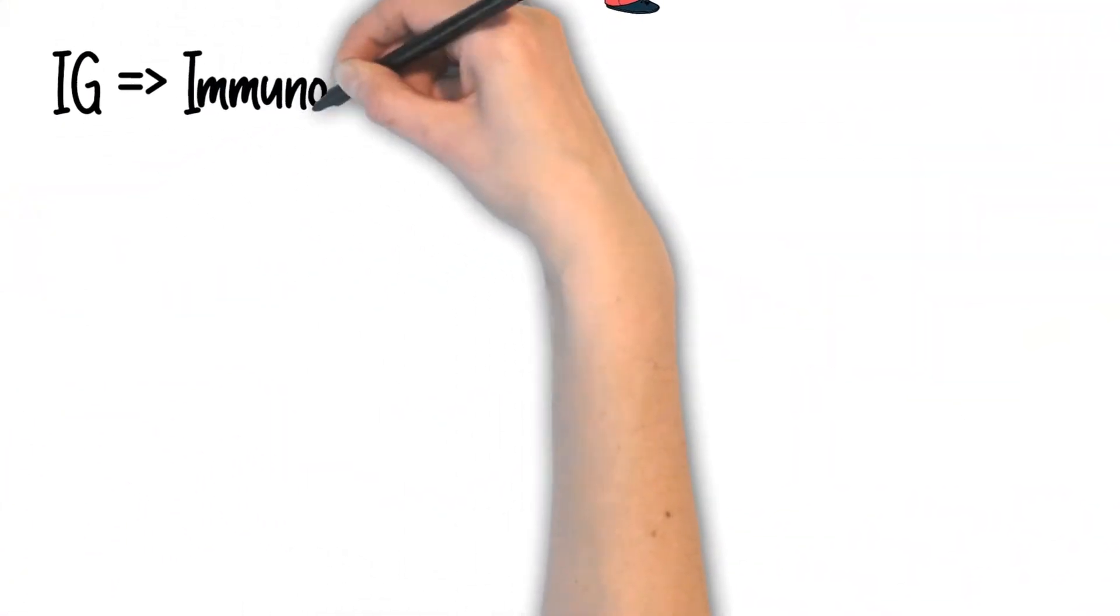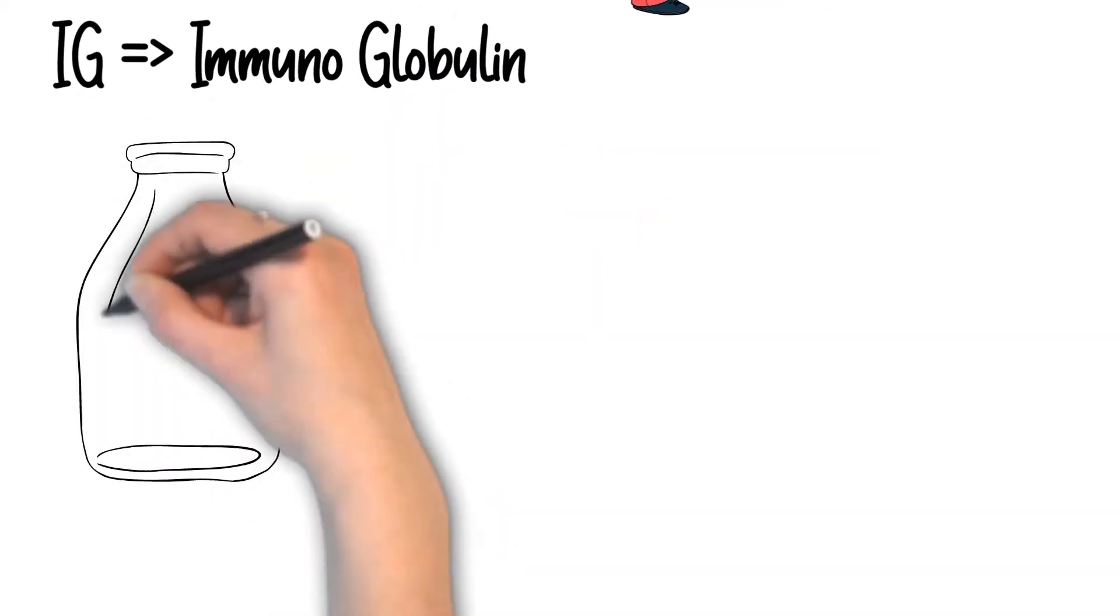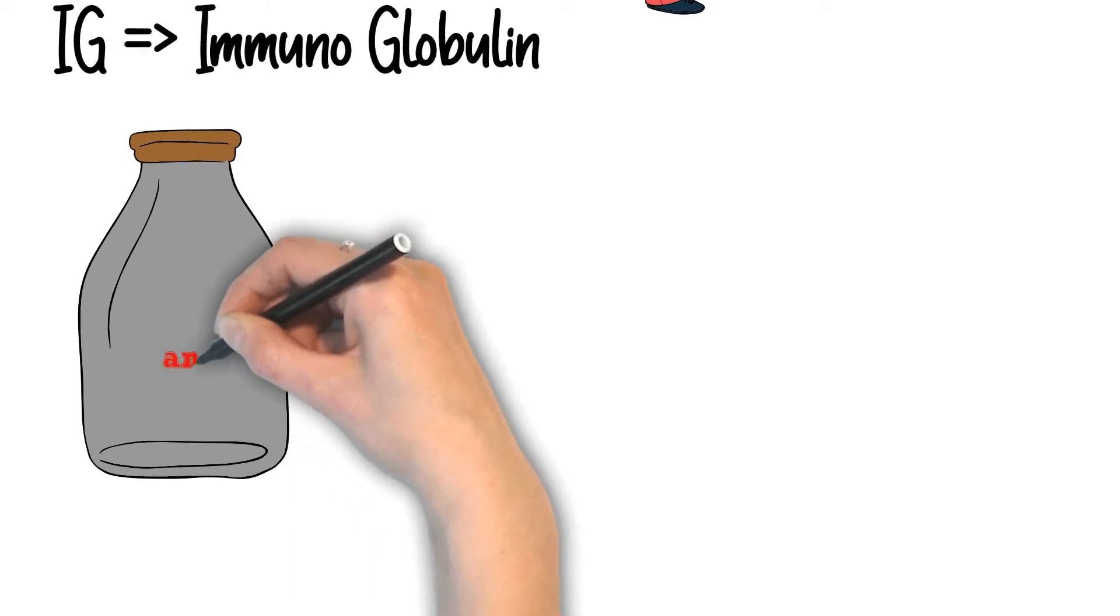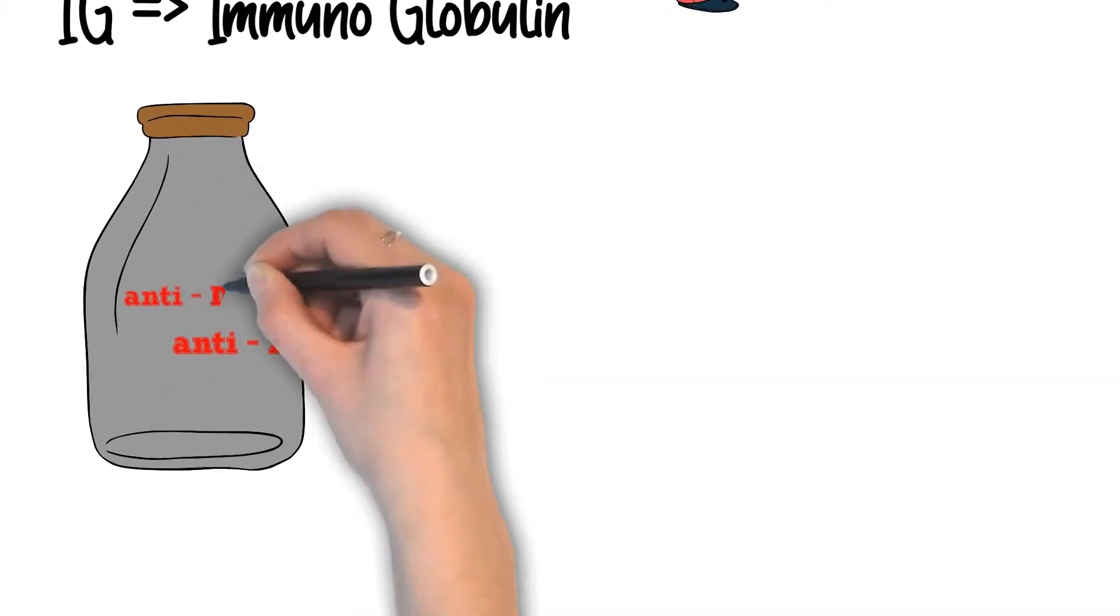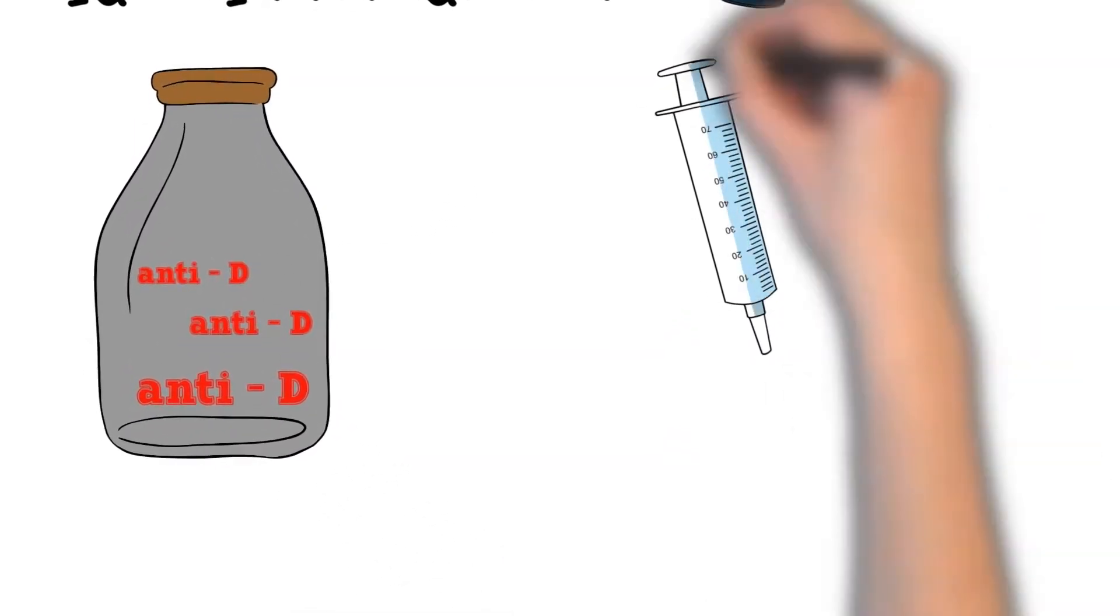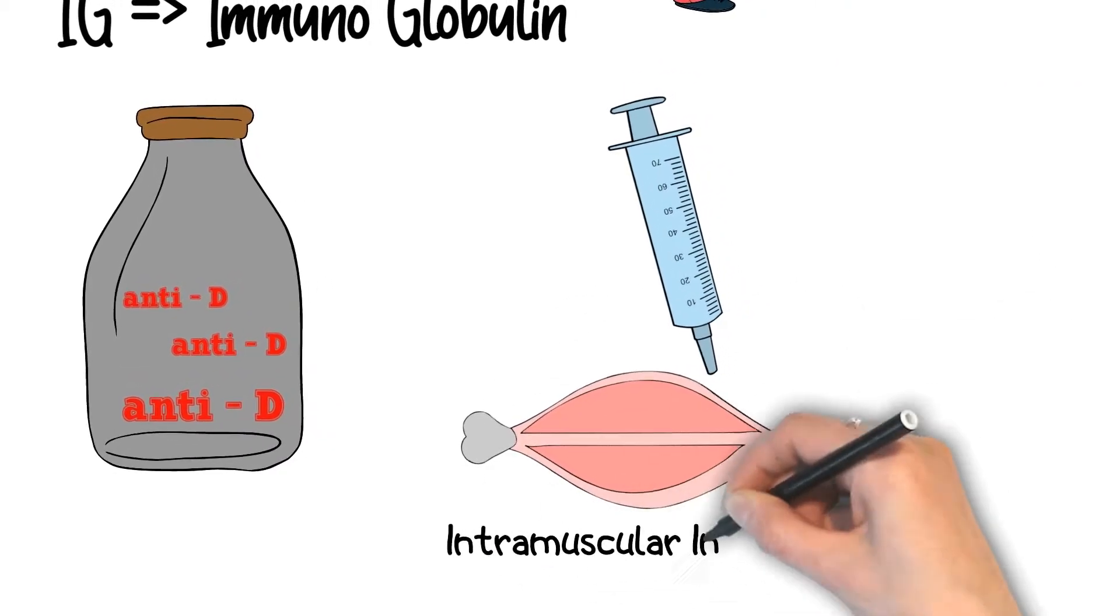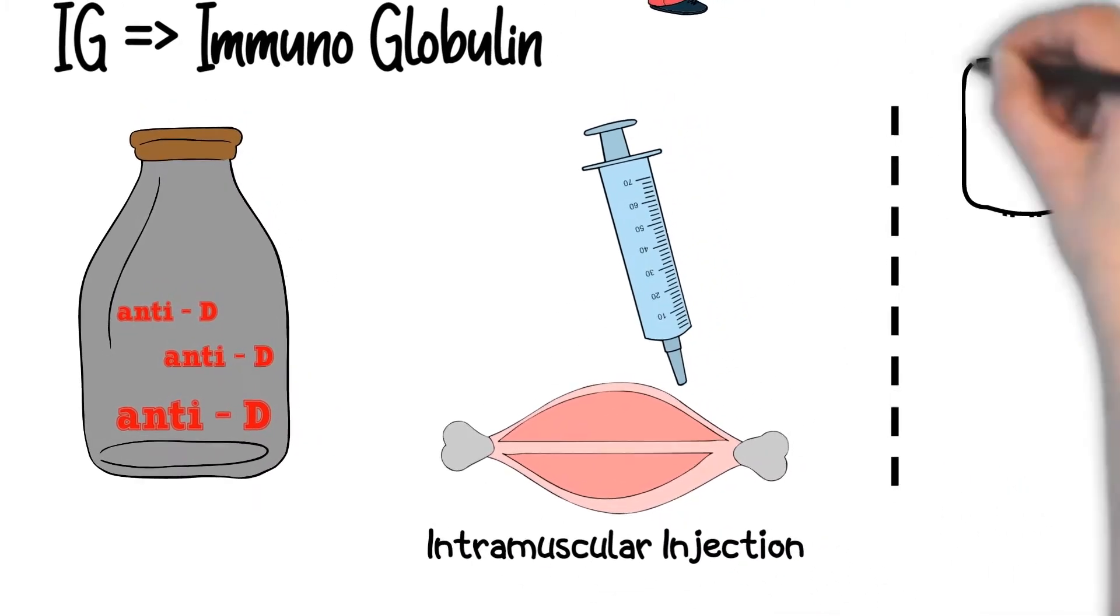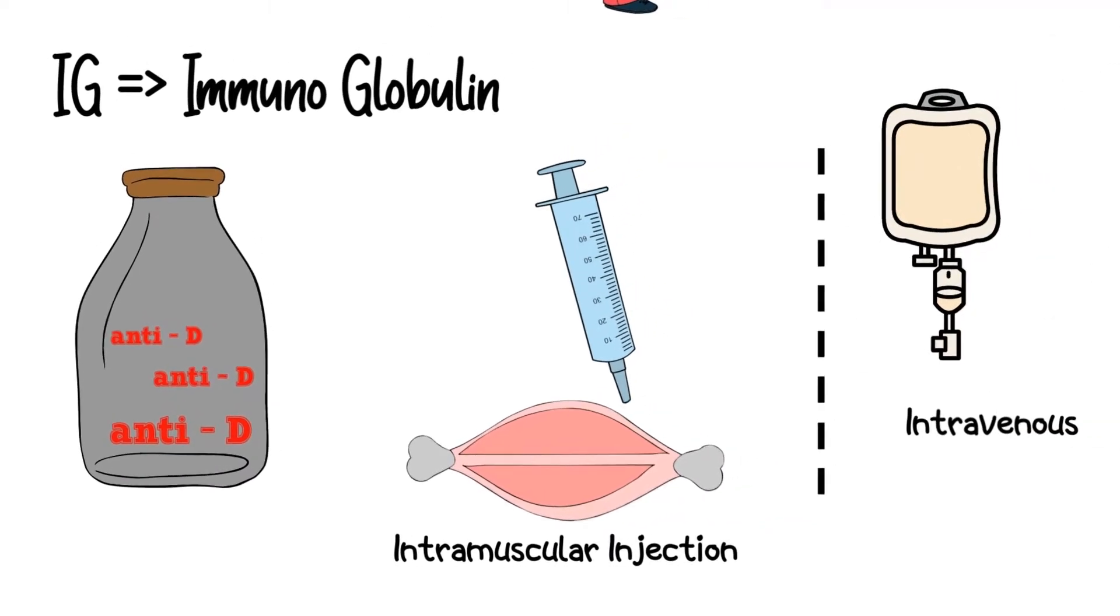IG is the abbreviation for immunoglobulin. For this video, I will refer to RH immunoglobulin as RHIG. RHIG is a medication that is prescribed to a child-bearing patient with RH negative to prevent the patient from developing antibody. RHIG can be administered by intramuscular injection or intravenous depending on the type of RHIG that was prescribed.